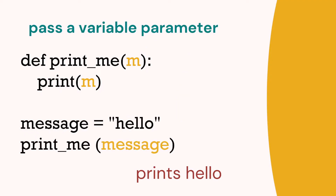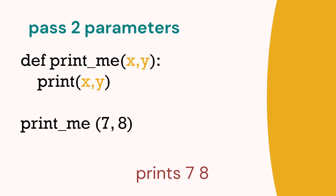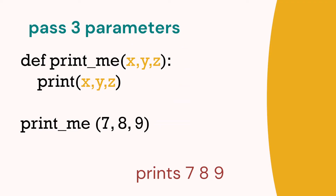Here hello is stored in a variable called message. We can pass that message as a parameter in the brackets to the function. Here we've got 7 and 8 — we can pass both of them in the brackets to x and y and then print them, giving us 7 and 8. Here we've got three parameters — it doesn't matter how many. We pass three when we call the function and receive three inside the function.